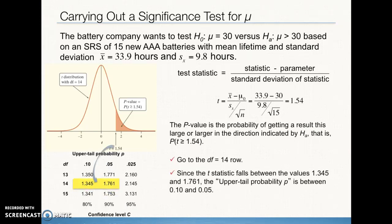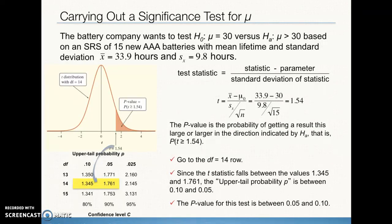To find our p-value, we see on Table B that our T test statistic of 1.54 falls between 1.345 and 1.761 with 14 degrees of freedom. Scanning upward, that gives an upper tail probability between 0.10 and 0.05, so between 5% and 10%. The p-value is between 0.05 and 0.10. We can also use TCDF for a more accurate probability, but what matters is that we are above our alpha of 0.05, which allows us to make a conclusion about rejecting or failing to reject even without an exact probability.